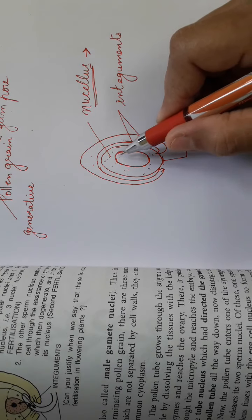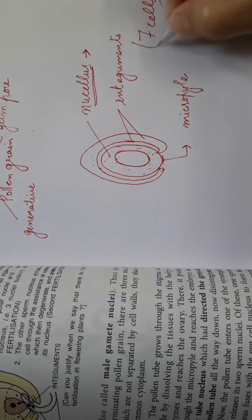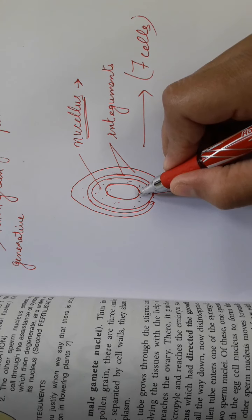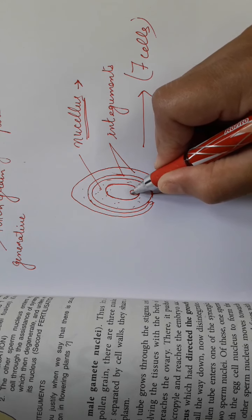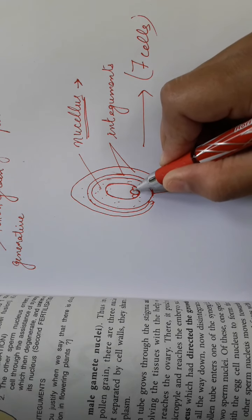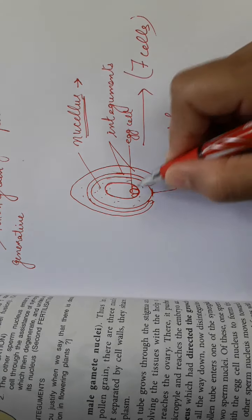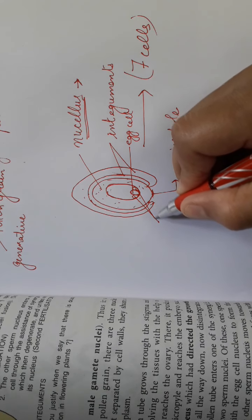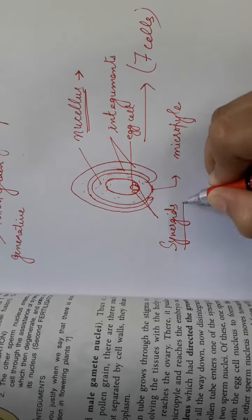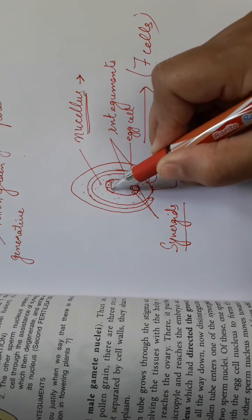Inside the embryo sac, the protoplast is arranged in seven cells. These seven cells are arranged such that three are at one end. Out of these three, the center one is called the egg cell — this is basically the female gamete. The two surrounding cells are called synergids, or helper cells. At the opposite end, there are also three cells — we call them antipodal cells.